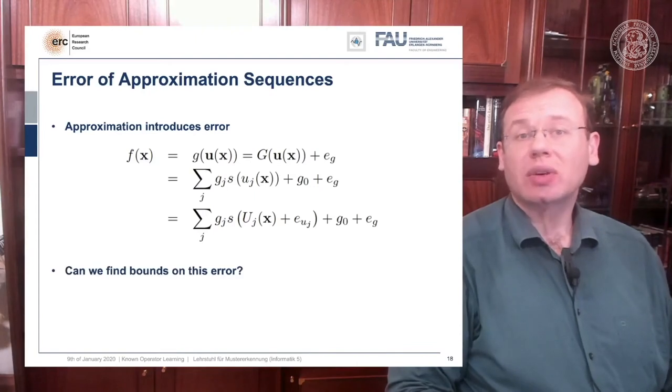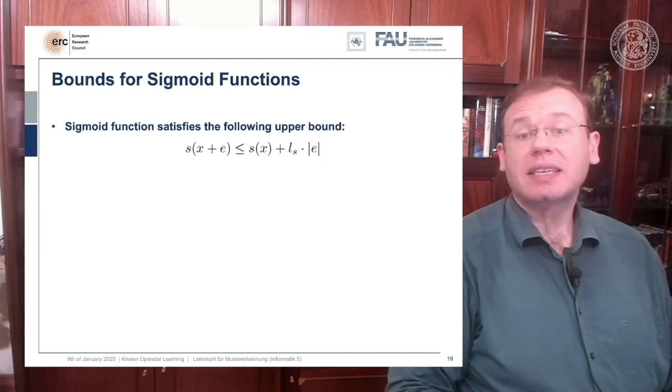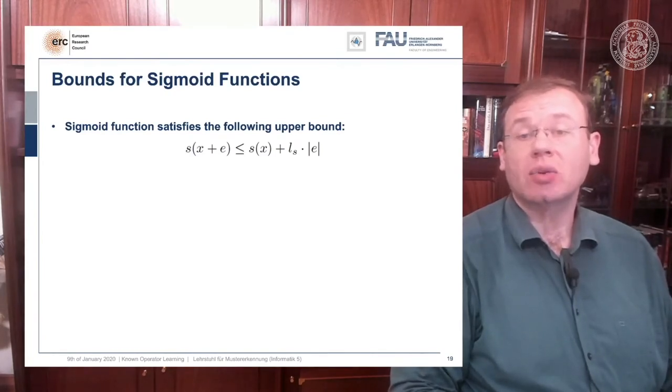Well at least we can look into error bounds. So let's have a look at error bounds and the key idea here is that we use the property of the sigmoid function that it has a Lipschitz bound. So there is a maximum slope that occurs in this function, and that is denoted by Ls, meaning that if I'm at the position x and I